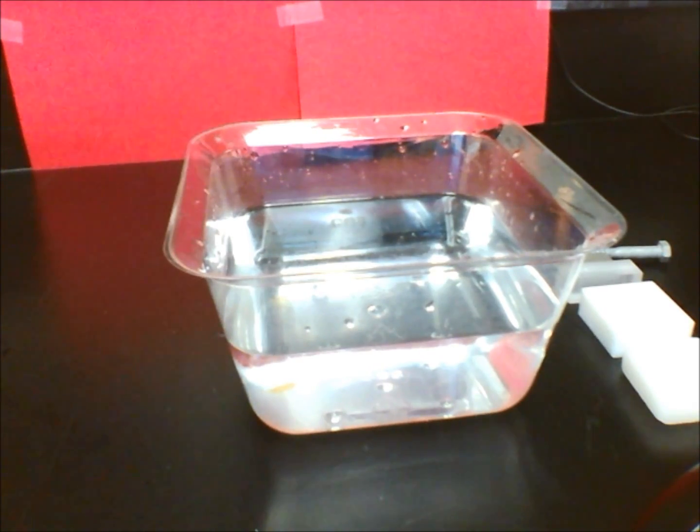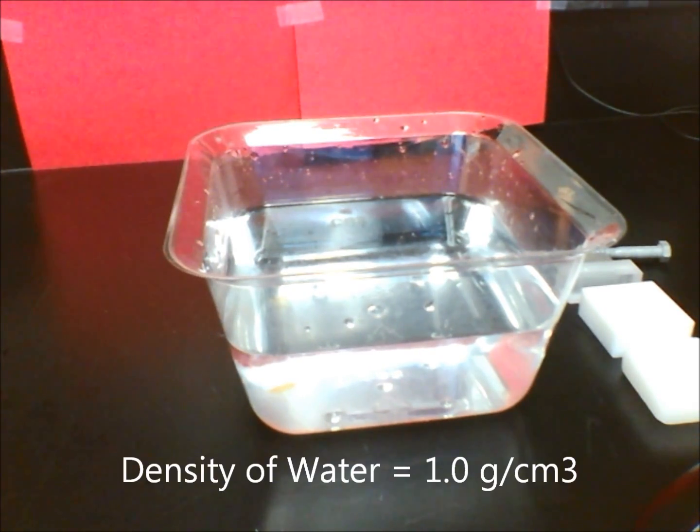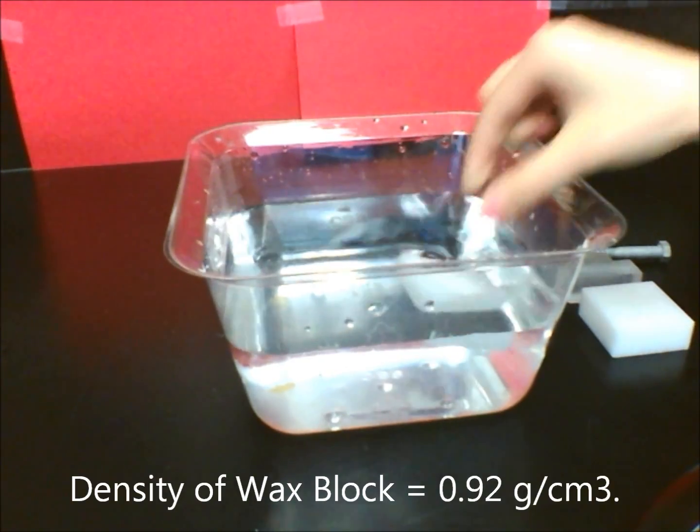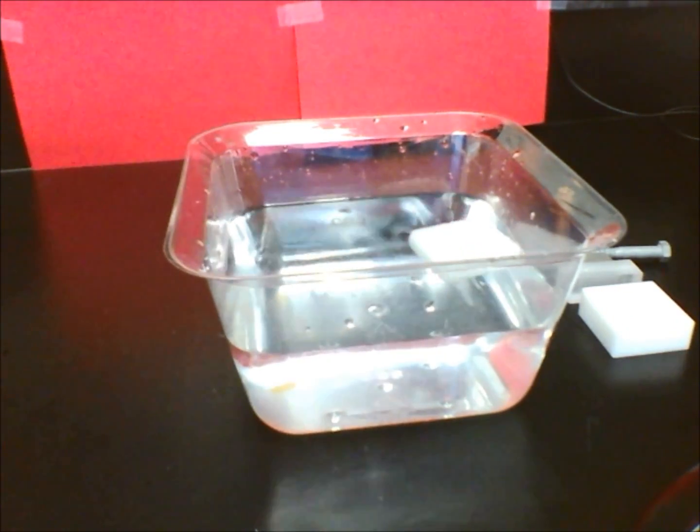For example, we know that water has a density of 1 gram per cubic centimeter. So we expect the wax block, which has a density of 0.92 grams per cubic centimeter, less than that of water, to float.